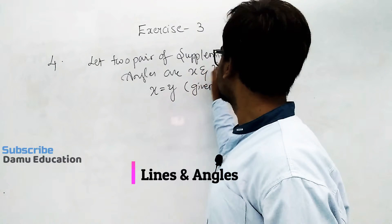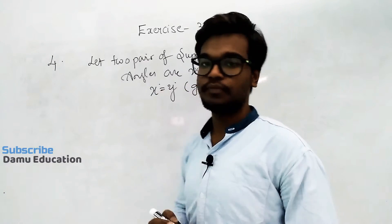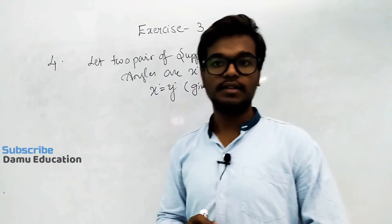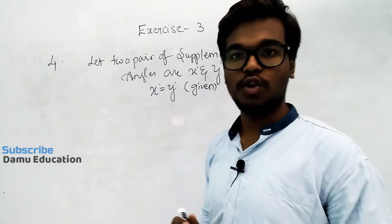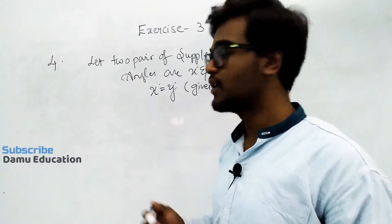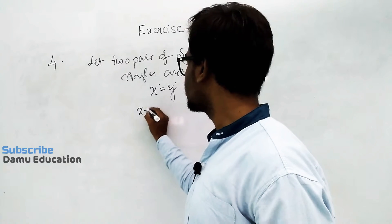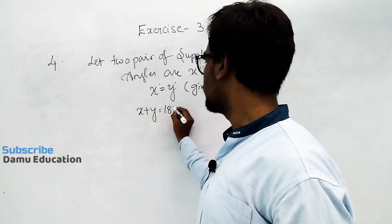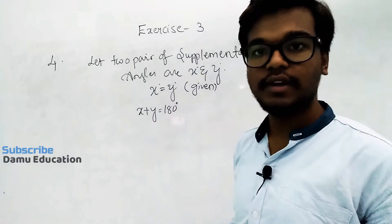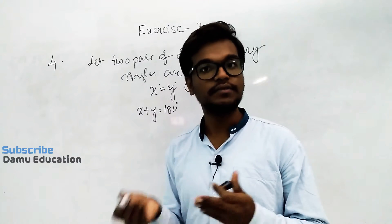x equals y. Supplementary angles condition is: sum of two angles will be equal to 180 degrees. Sum of two angles, that is x plus y, will be equal to 180 degrees. In place of y we can substitute x, or in place of x we can substitute y.